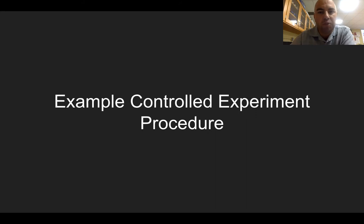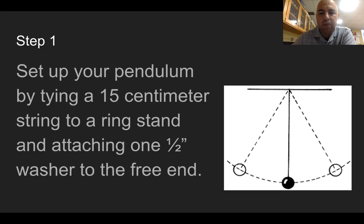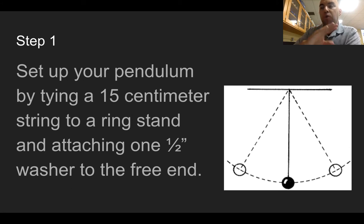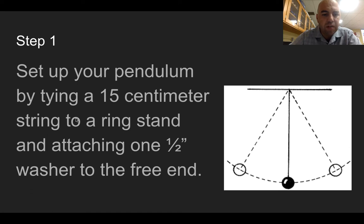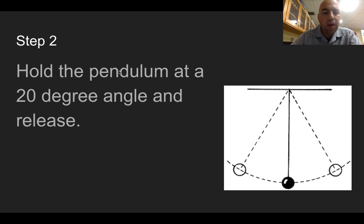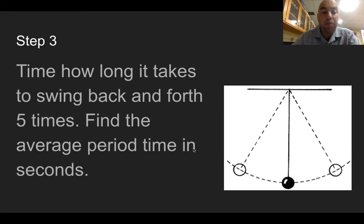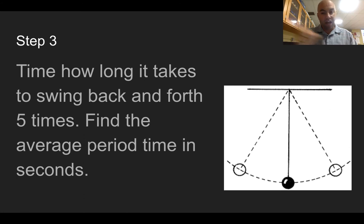Let's do an example controlled experiment procedure together. Step one: tie a 15-centimeter string to a ring stand and attach one half-inch washer to the free end. Step two: hold the pendulum at a 20-degree angle, then release. Step three: measure how long it takes to swing back and forth five times, then divide the total time by five to find the average period in seconds. Step four: perform steps one through three twice more to find the average period for a pendulum with one washer.